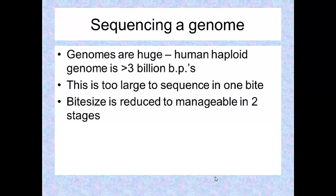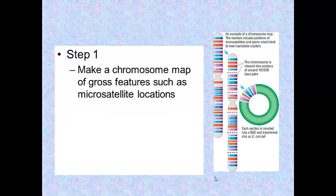Overall, this process is sometimes referred to as shotgun sequencing - shotgun because shotguns tend to blow things apart into many smaller pieces, and then you put them back together again. Step 1 is to make a chromosome map using gross features, easily identifiable features such as microsatellite locations.